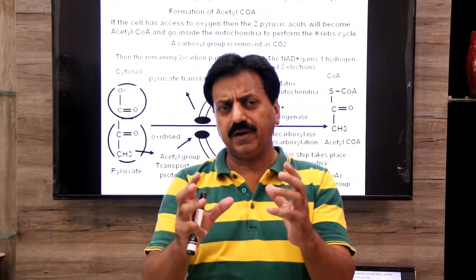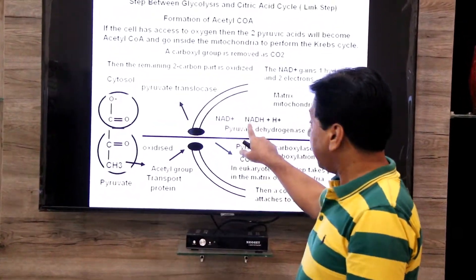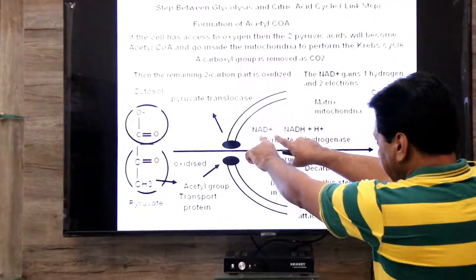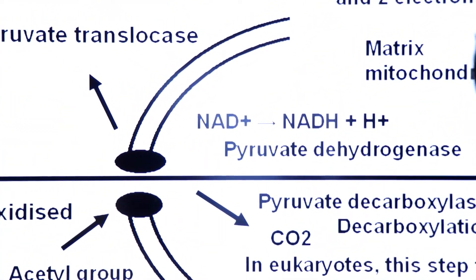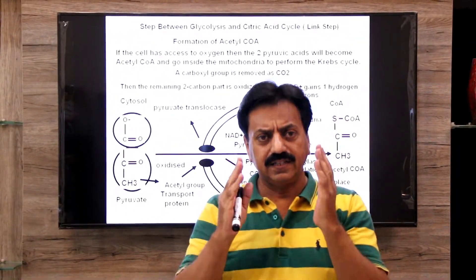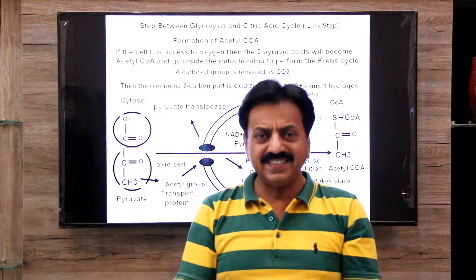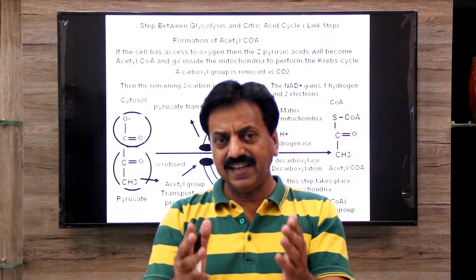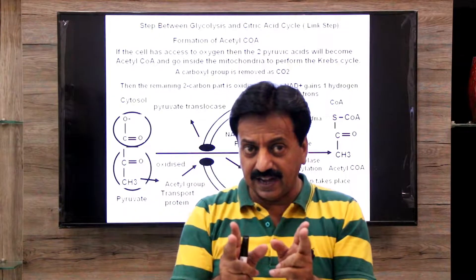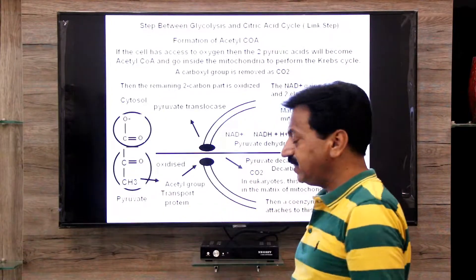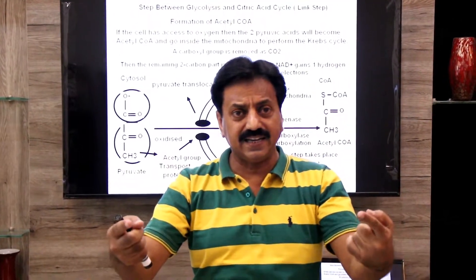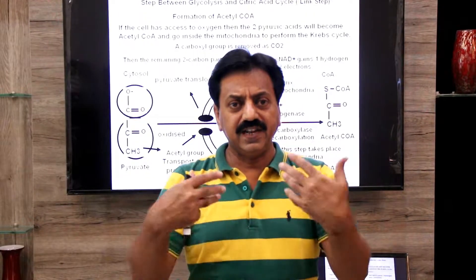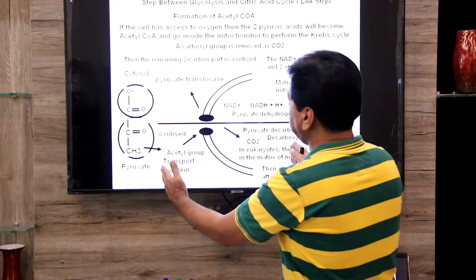Here is a very important point: just as in glycolysis step number six NADH was produced, similarly in this link step NADH is also produced. These electrons are passed on to the electron transport chain to ultimately transfer electrons to oxygen — the final electron acceptor. So remember: we had 2 NADH from glycolysis, now 2 more are added here for a total of 4 NADH so far.